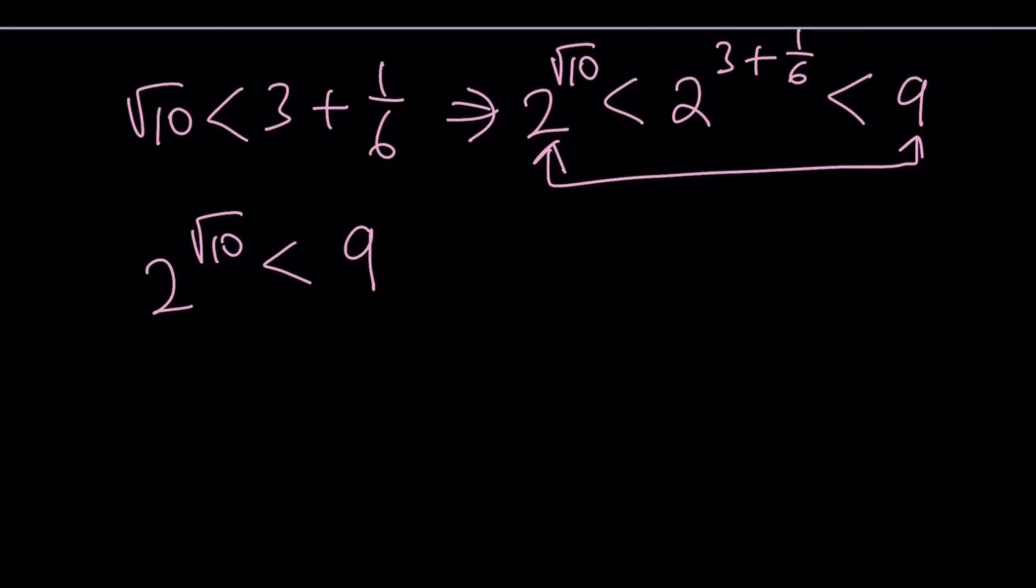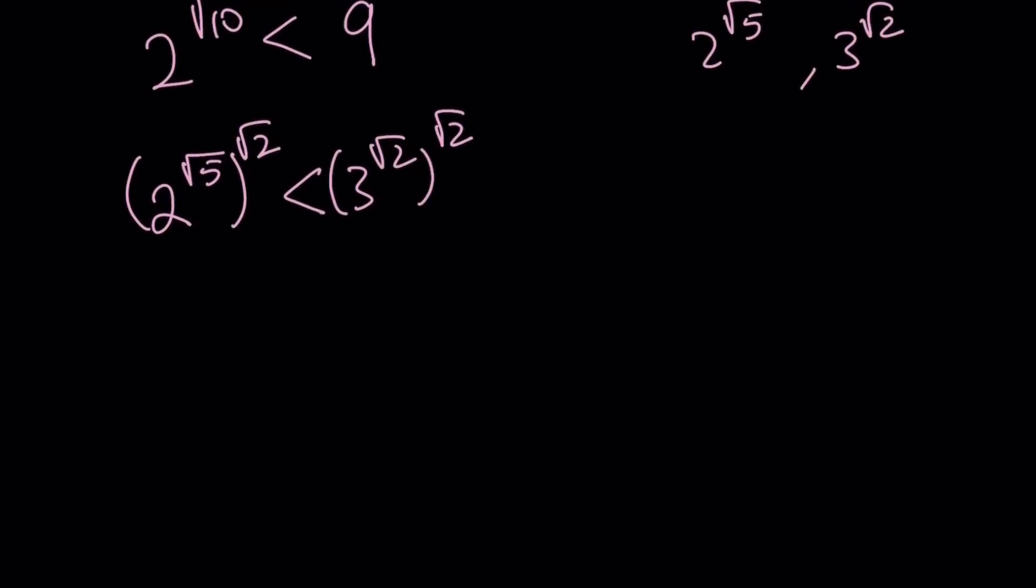Now, how do I go from this to 2 to the power square root of 5 and 3 to the power square root of 2? If you look at it very carefully, 2 to the power square root of 10 can be written as 2 to the power square root of 5 to the power square root of 2, because square root of 5 times square root of 2 is square root of 10. And 9 can be written as 3 squared, which is 3 to the power square root of 2 to the power square root of 2, because square root of 2 squared is 2. So by taking both sides to the power 1 over square root of 2, we get the result. In other words, cancel these out and you'll get the answer.